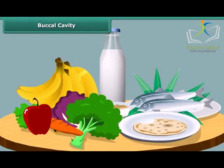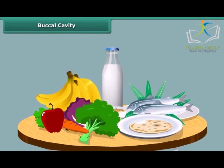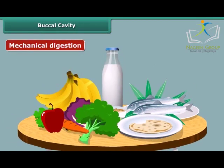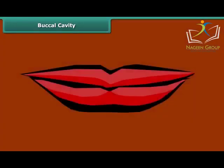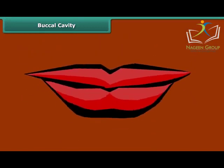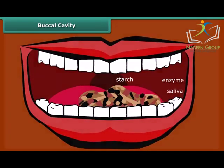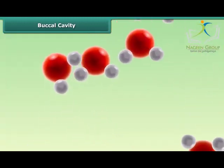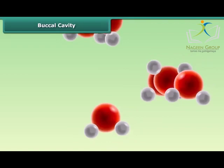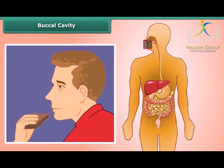Breaking down of food occurs by two ways: mechanical digestion and chemical digestion. Mechanical digestion is the physical breaking down of food when we chew the food with the teeth. Chemical digestion is the chemical breakdown of food into molecules the body can absorb. Both types of digestion take place in the mouth.